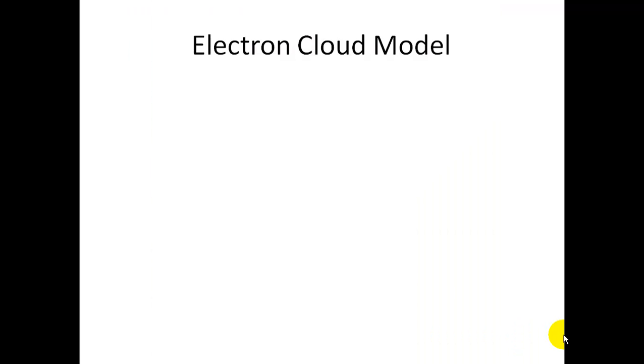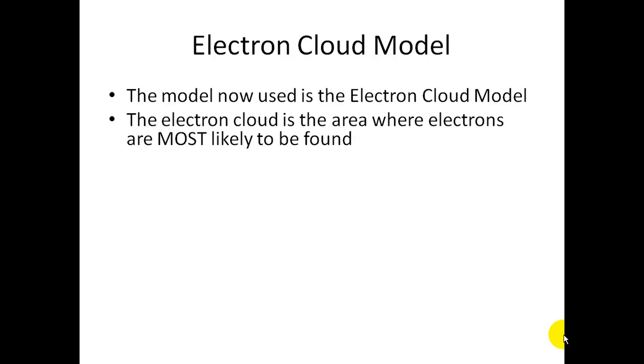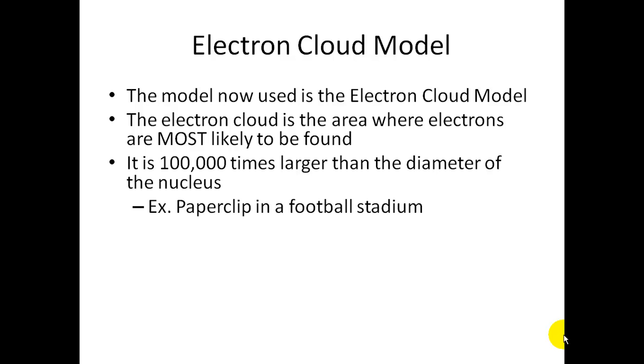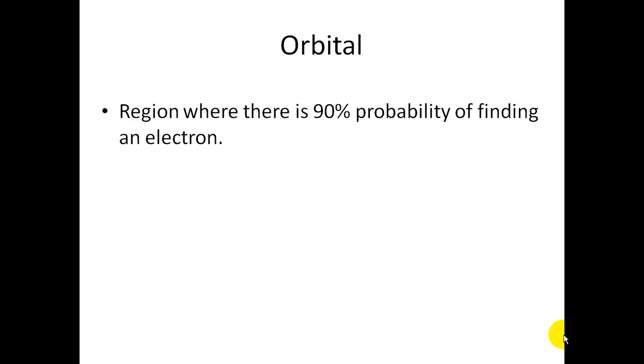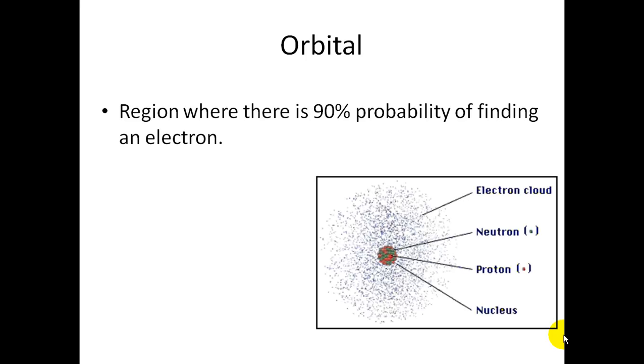It's called the electron cloud model, the model that is now used. The electron cloud is the area where electrons are most likely to be found. It is 100,000 times larger than the diameter of the nucleus. For example, if there was a paper clip in the football stadium, the paper clip would represent the nucleus, and the football stadium around it represents the electron cloud. It is very, very large. Another term is called orbital. The orbital is the region where there is a 90% probability of finding the electron in the electron cloud. You can't pinpoint the location of an electron. It's constantly moving and orbiting.